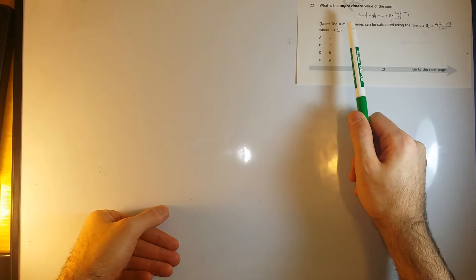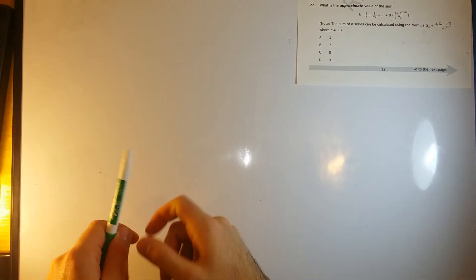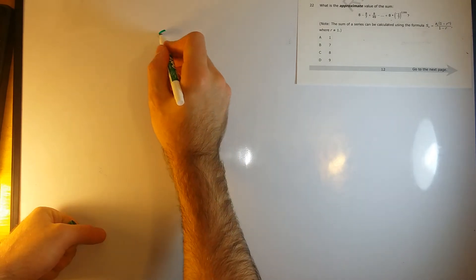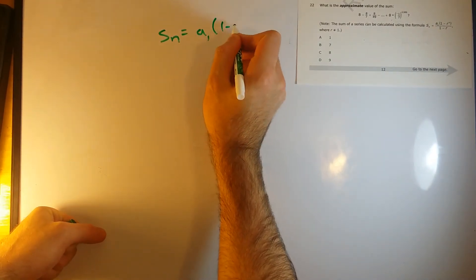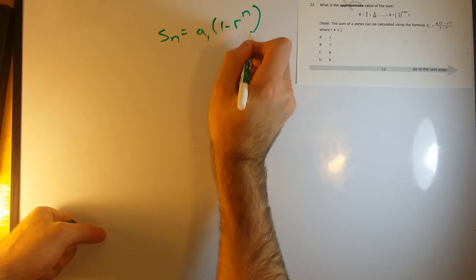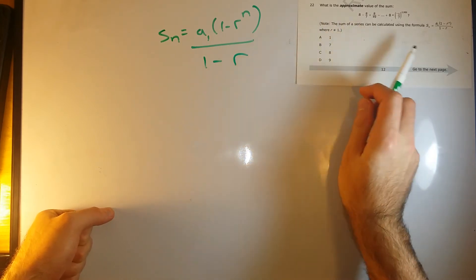And then it says, note, the sum of a series can be calculated using the formula S of N equals A sub 1 times 1 minus R to the N all over 1 minus R. So this note here kind of gives away the whole show.